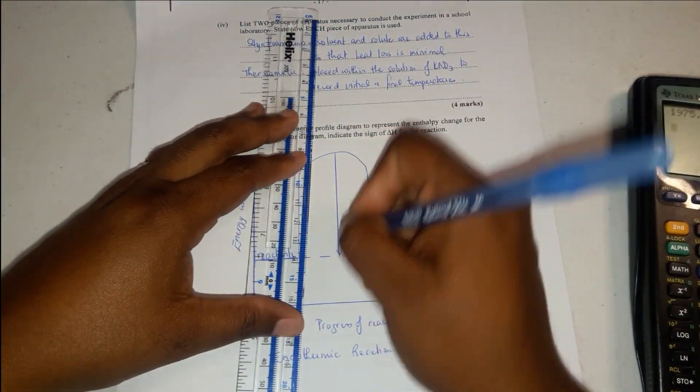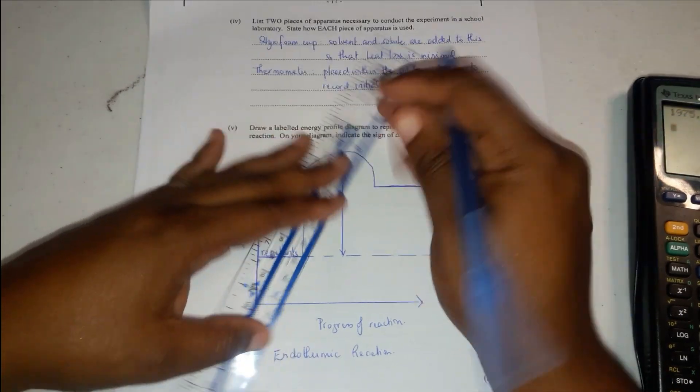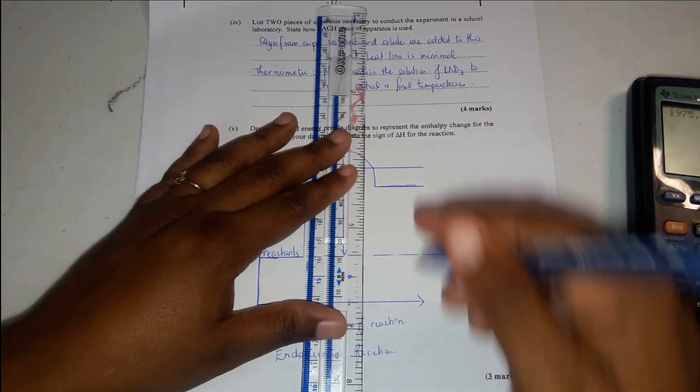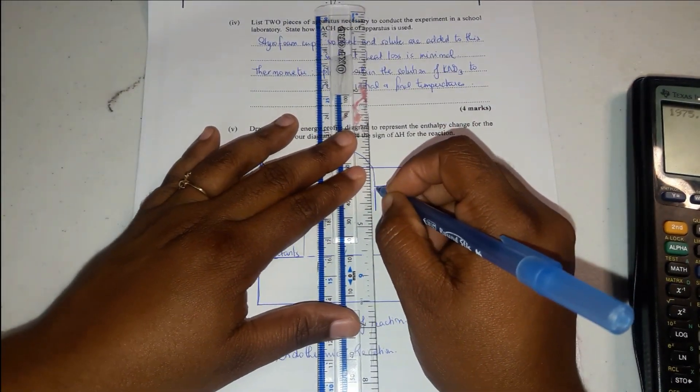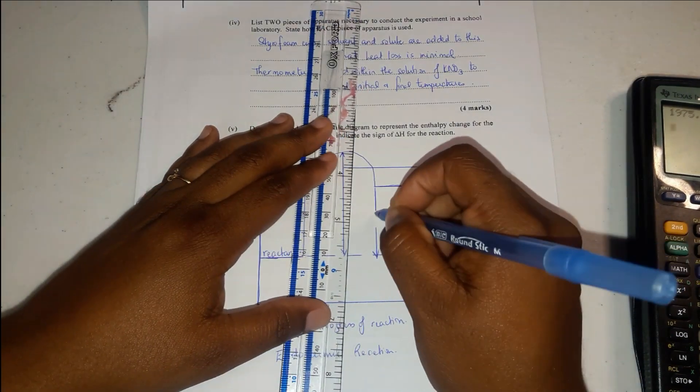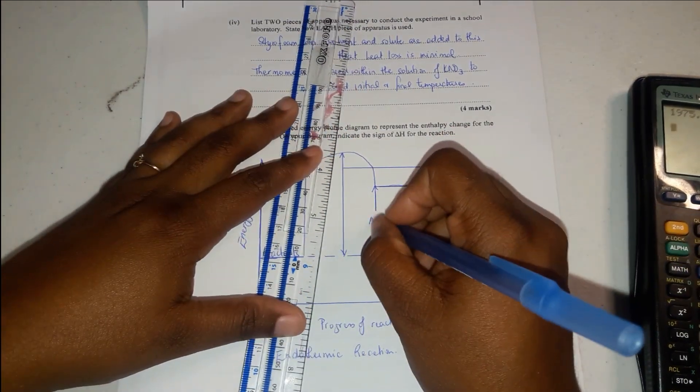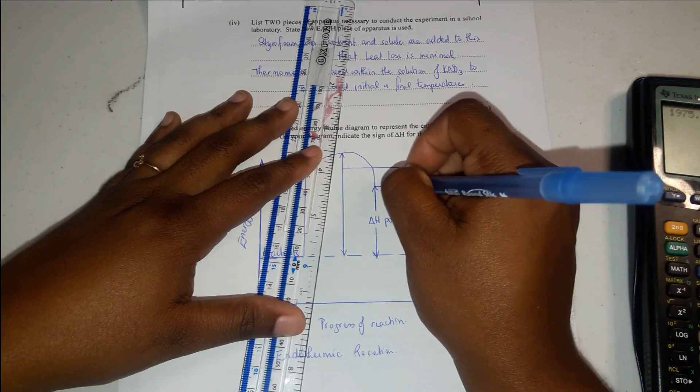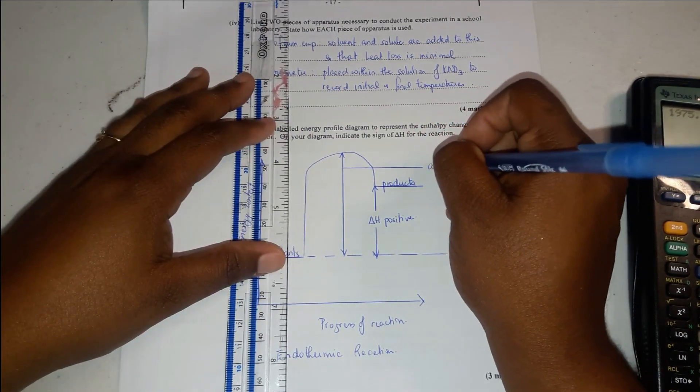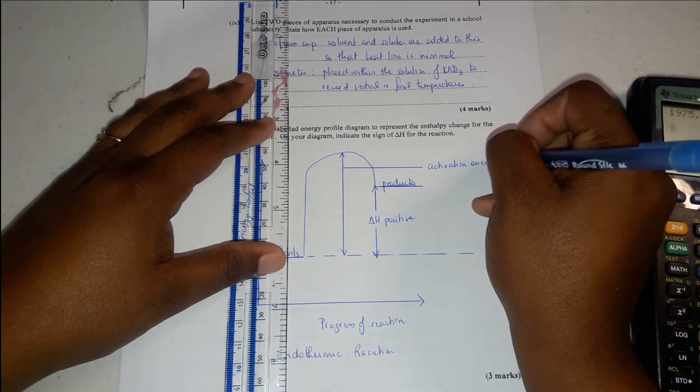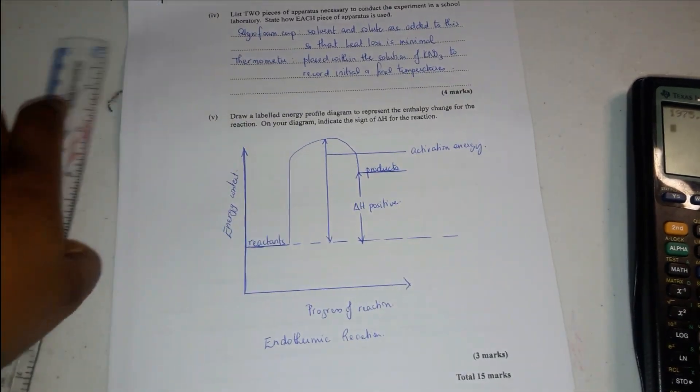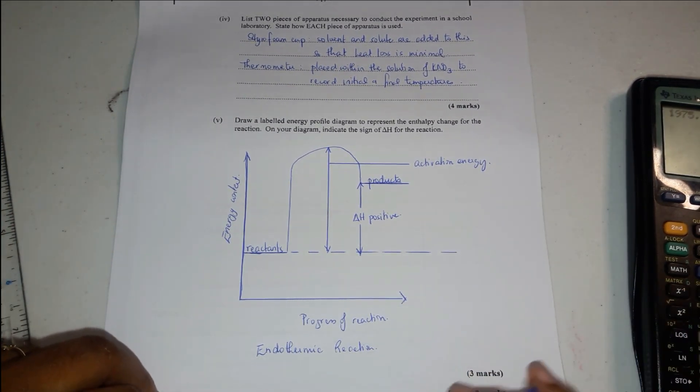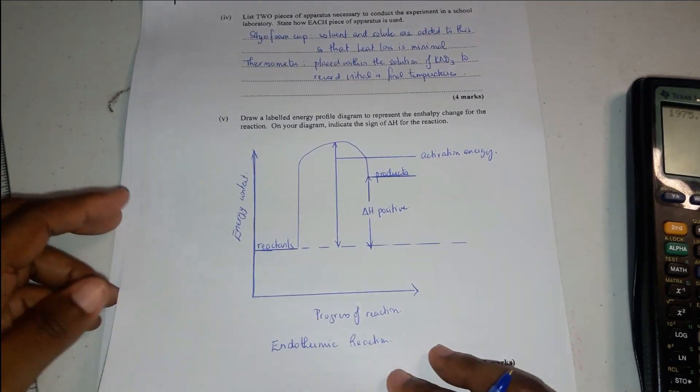This is our activation energy right here. Try to be as neat as you possibly can. You don't really want to get your markers upset or tired because they would be marking so many questions. Delta H positive. Label the products here, and then we have activation energy. You don't want to get them mad. Try your best to be as neat as possible. And that's the complete solution to question 4. See you around.